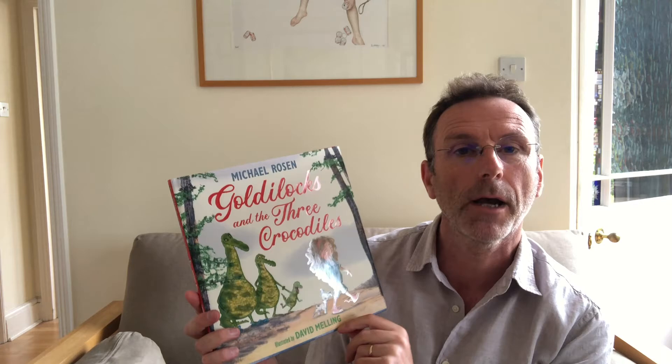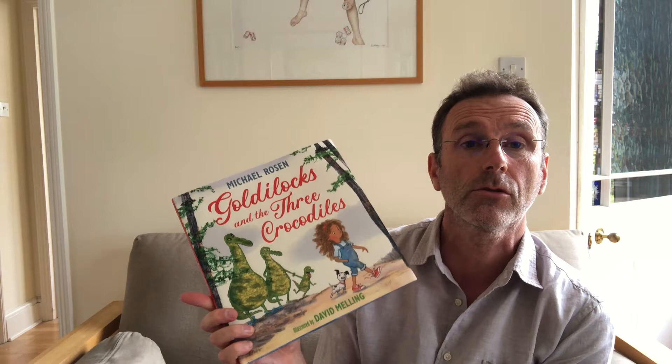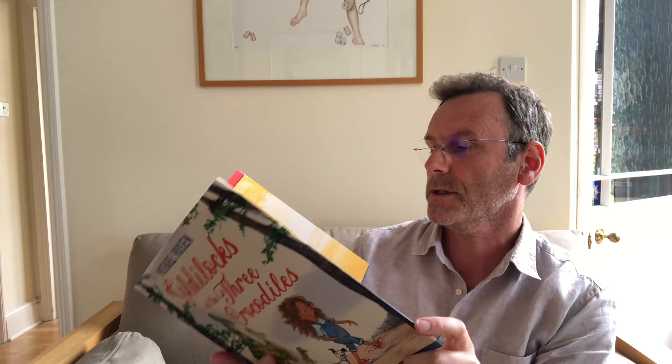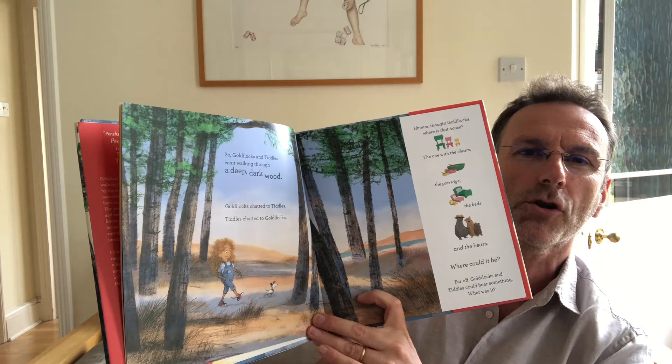Hello, I'm David Melling and I'm the illustrator of Goldilocks and the Three Crocodiles by Michael Rosen. I'm really pleased about this book. It's the first time I properly worked with Photoshop, a little bit of digital illustration. Usually I work with traditional tools, watercolor, brushes, etc. But with this one I wanted to see if I could try something a little bit different in my approach, which allows me to tackle some of these spreads and images in a more challenging way than just with paint. And I'm really pleased with the results. I hope you are too.